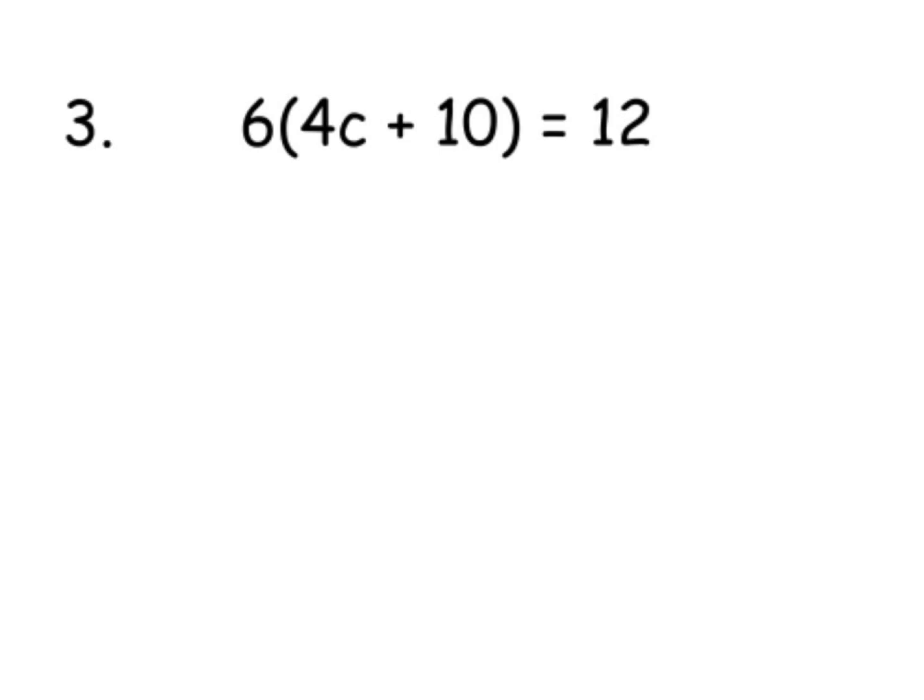Let's look at the third example. Just bigger numbers this time. We're times everything by 6. 6 times 4 is 24c, 6 times 10 is 60, and the 12 isn't being touched. Now this one is going to go into negatives. To counteract the plus 60, I'm going to take away 60 from each side, so I have 24c equals negative 48.